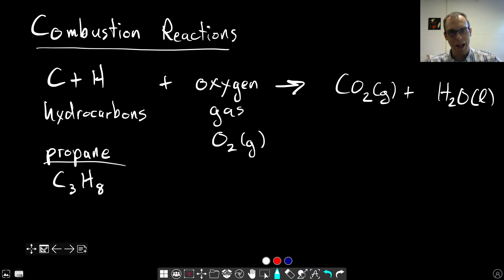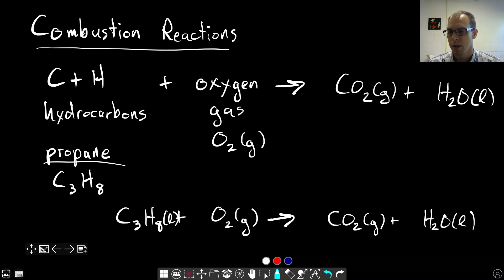Let's write a balanced chemical equation for the combustion of propane. So combustion means we know what the reactants are. The reactants are propane, and propane is a liquid at room temperature. That just happened to know off the top of my head. Reacting with O2 gas. We know that that's going to be our other reactant because that's what makes it a combustion reaction. And we know what our products are: CO2 gas and H2O liquid.